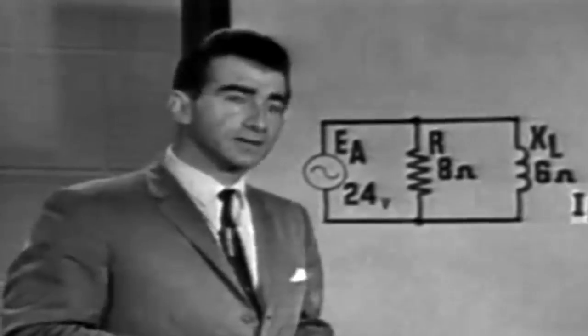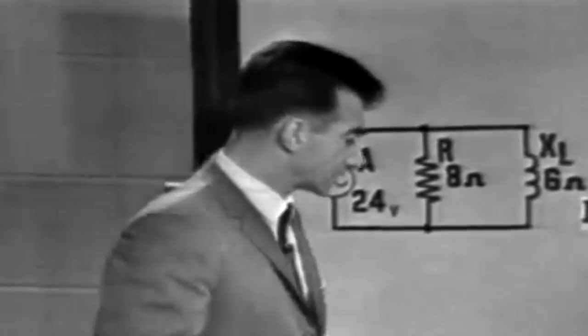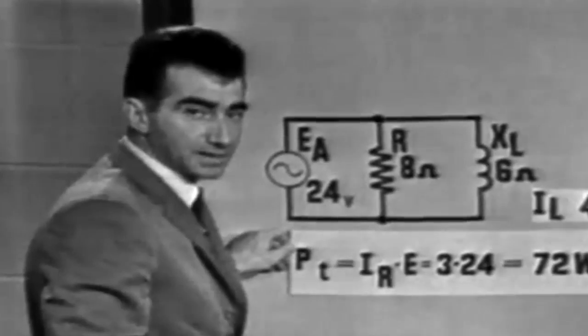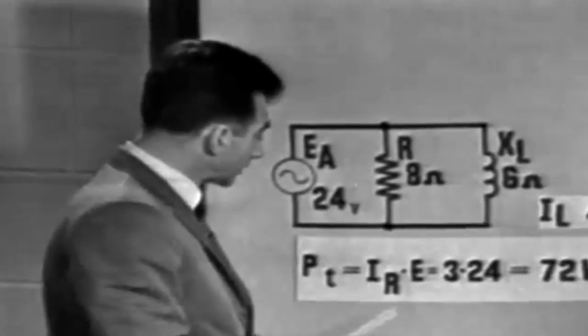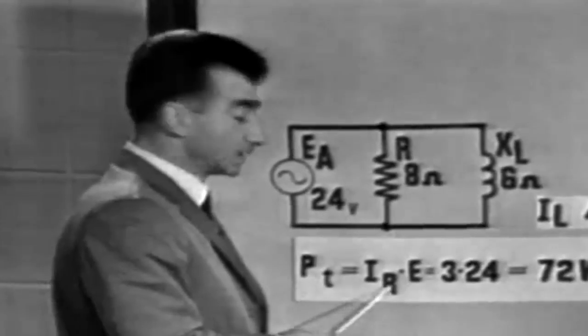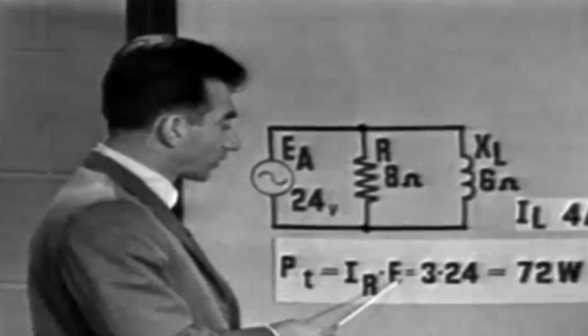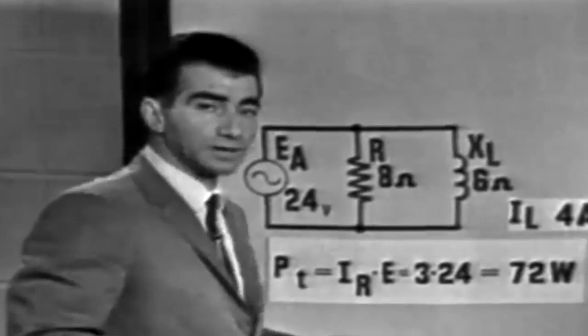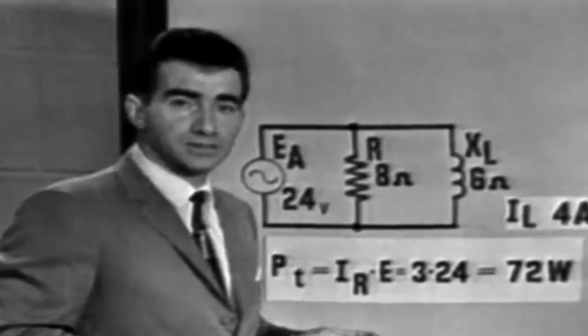Now, we can calculate the power factor for this circuit by first finding the true power, or the power actually dissipated by the resistor. And we would simply apply the formula, P is equal to I times E. And since we're dealing with the power dissipated by the resistor, we would use IR. So, the true power is equal to IR times the applied voltage, or 3 times 24, which is equal to 72 watts. 72 watts is the true power being dissipated by the resistor in this circuit.